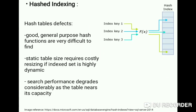The second technique is hashed indexing, which is similar to a hash table. However, there are some defects: good general-purpose hash functions are very difficult to find; static table size requires costly resizing when the indexed set is highly dynamic; and search performance degrades considerably as the table nears its capacity.